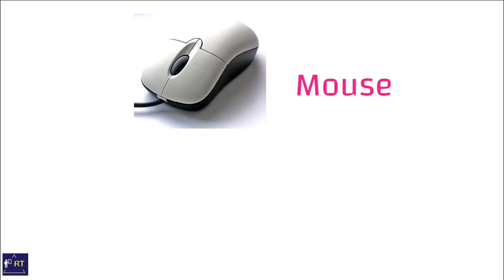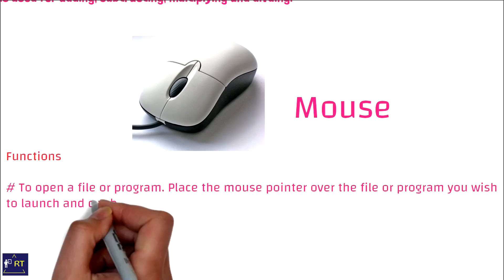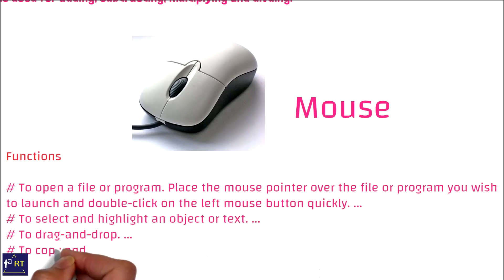Mouse. To open a file or program, place the mouse pointer over the file or program you wish to launch and double-click the left mouse button quickly. It is also used to select and highlight an object or text, to drag and drop, and to copy and paste. These are the functions of a computer mouse.